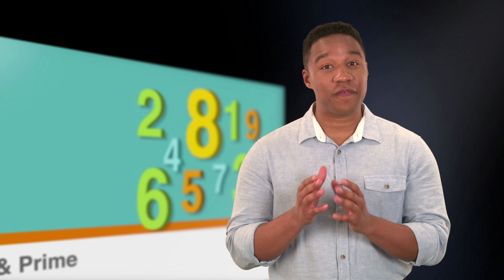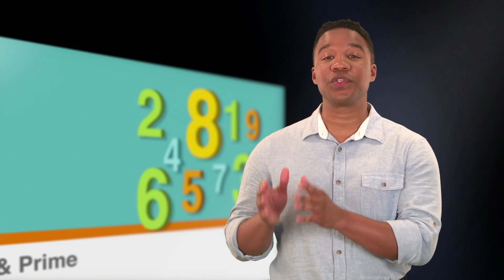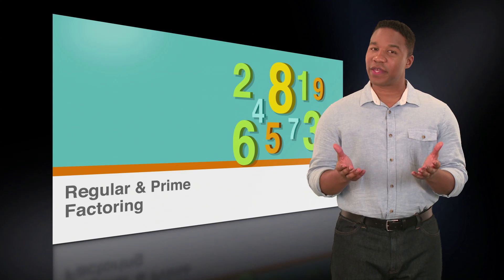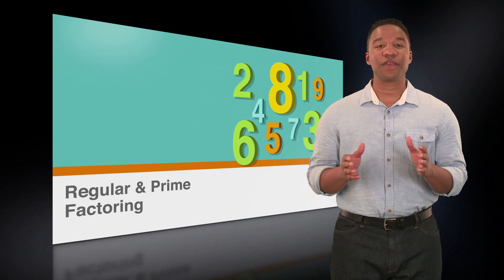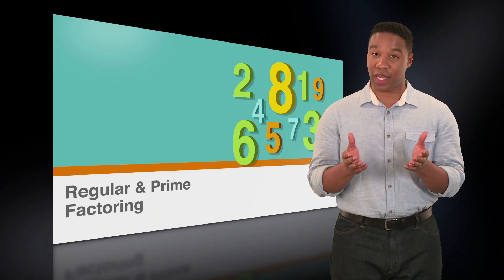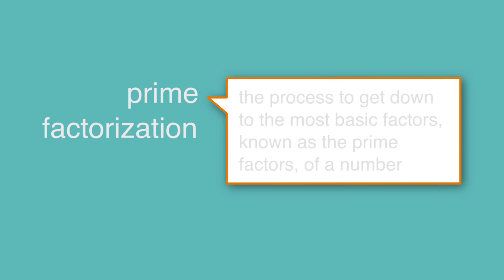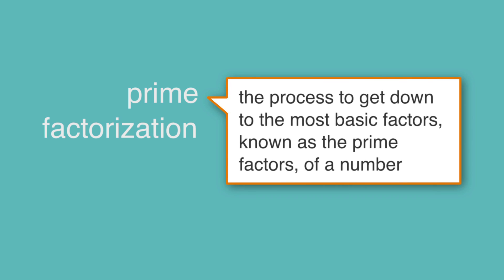You may have noticed that the factors of a number can also have factors of their own. For example, 6, a factor of 12, has factors of 2 and 3. So, maybe there's a way to break down that factor tree even further until none of the factors have other factors themselves, right? There sure is. This is called prime factorization, the process to get down to the most basic factors known as the prime factors of a number.